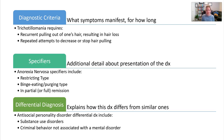Some but not all disorders have an option to add a specifier, which provides some additional detail about the presentation of that diagnosis. For example, with anorexia nervosa, some specifiers include whether it is a restricting type or a binge eating/purging type.